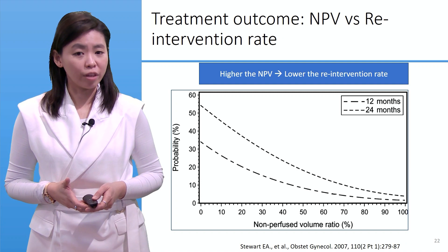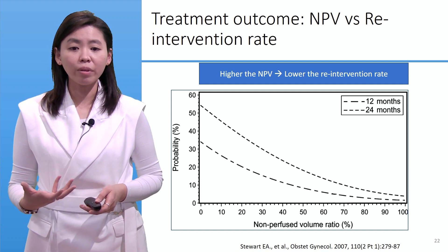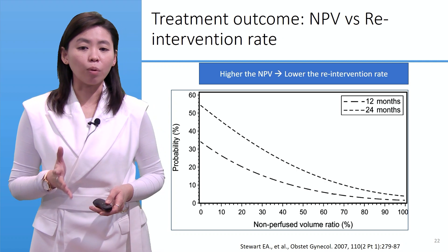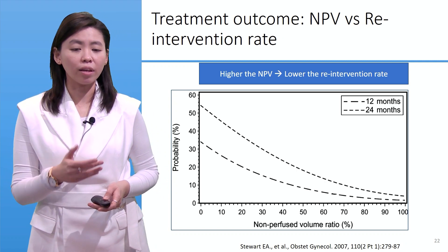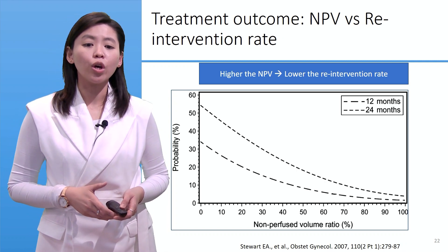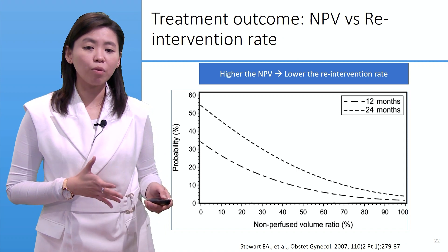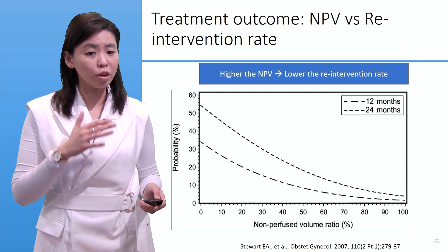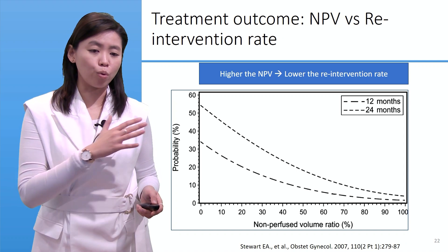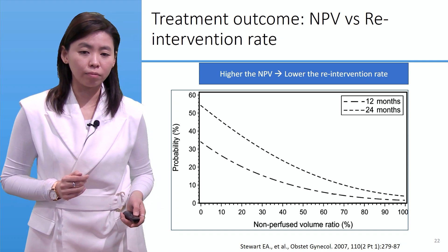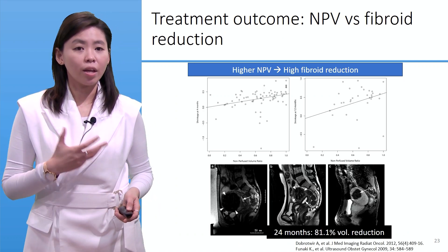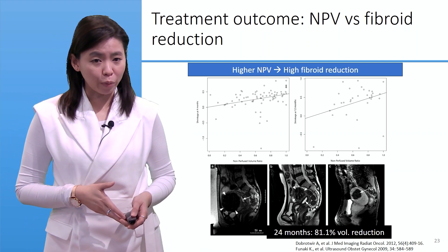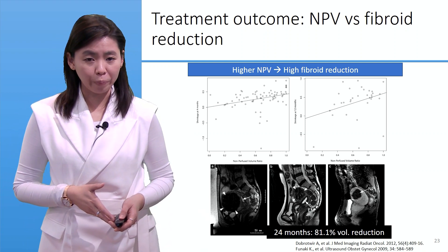MPV can also be correlated to re-intervention rate — the higher the MPV, the lower the re-intervention rate. On the y-axis you have probability and on the x-axis the MPV ratio, so with increasing MPV ratio the probability of re-intervention at 12 and 24 months will also decrease. MPV is also correlated to fibroid volume reduction.